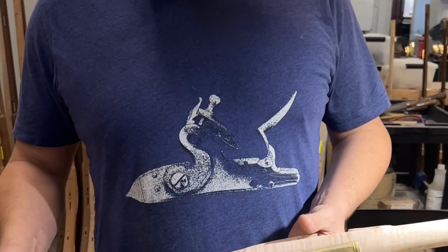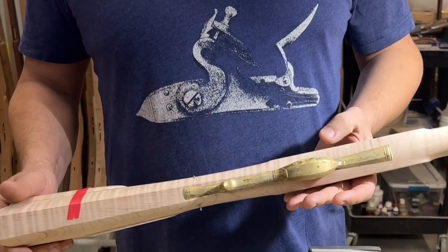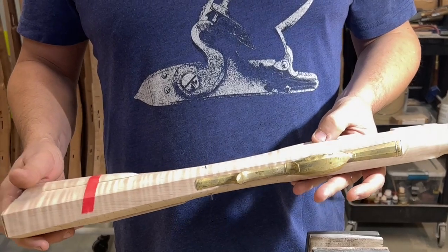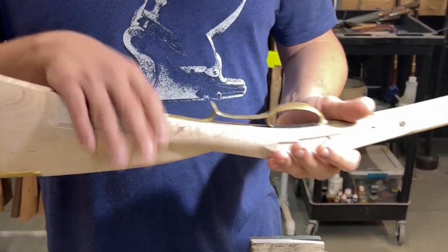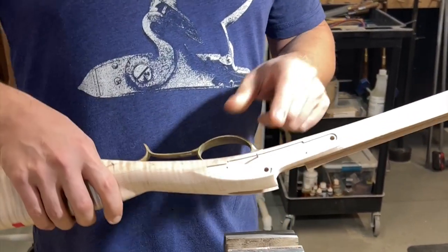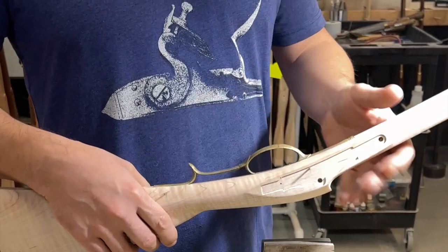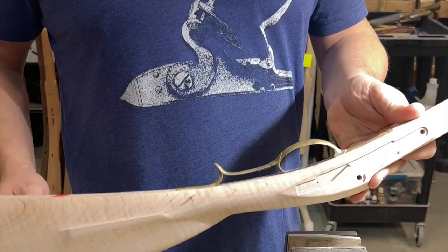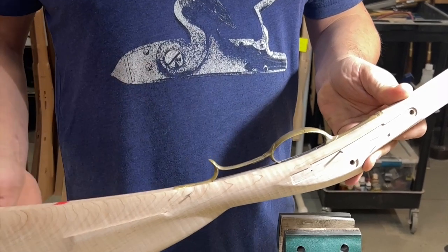The first thing I think we'll do is we're going to actually remove the trigger guard, and we're going to install the trigger. In order to remove the trigger guard, it's held on with these pins.